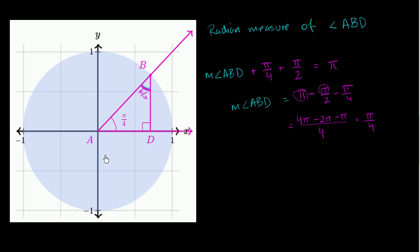That angle right over there is pi over 4. Since we know both base angles are pi over 4, and this is a unit circle so the length of segment AB — the radius — is 1, we can ask: can we figure out the lengths of segment AD and segment DB? Because we have two base angles with the same measure, the corresponding sides are also going to have the same measure.